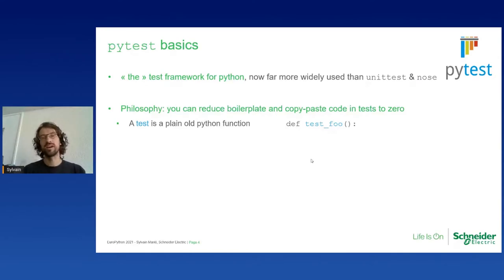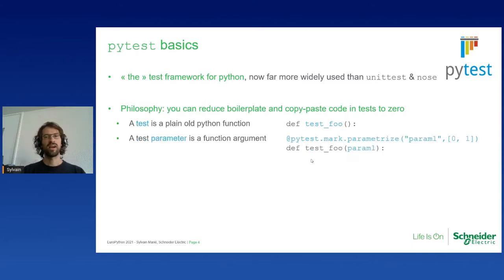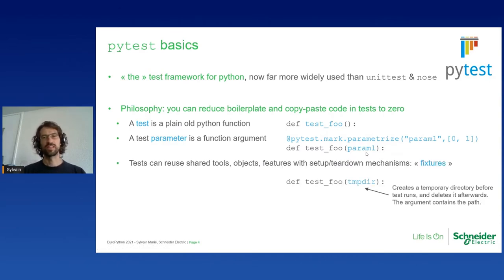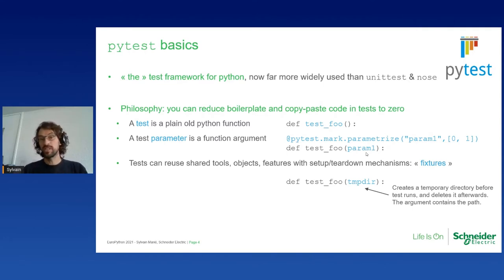It's based on three pillars. The first one is that a test is just a plain old Python function, such as this test_foo function here. Second, you can parameterize tests by decorating this function and telling the decorator what is the name of the parameter and the range of values. With just that one line, your test will generate two tests, and the value of the parameter will be injected as an argument in your test function. So extremely simple.